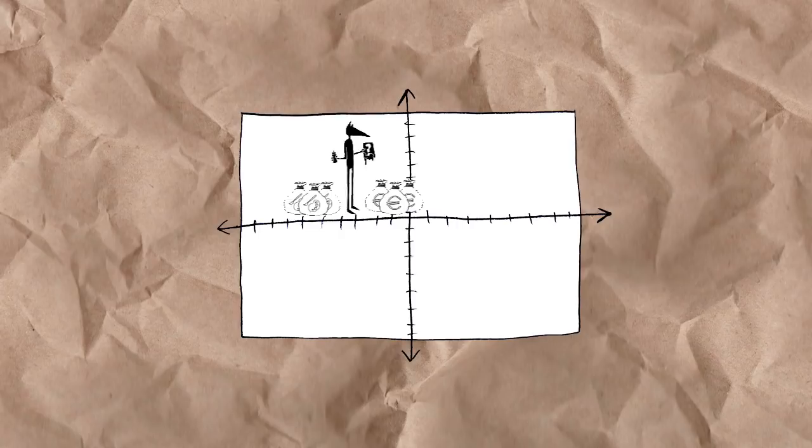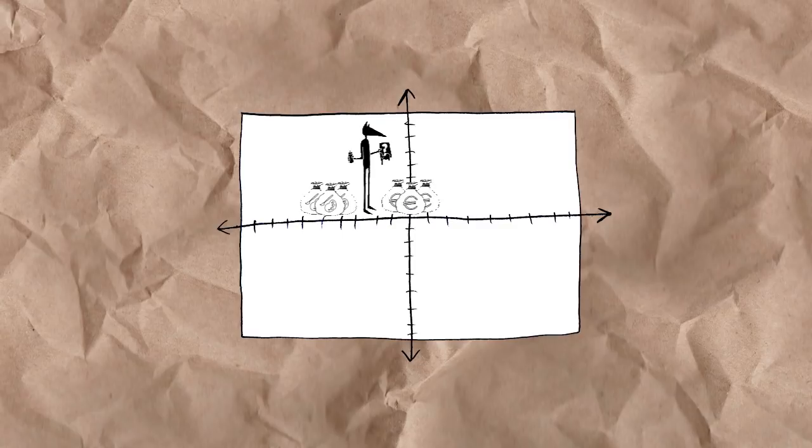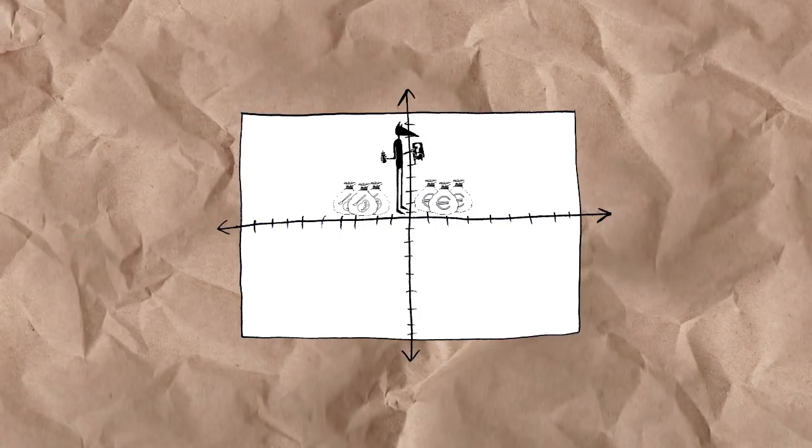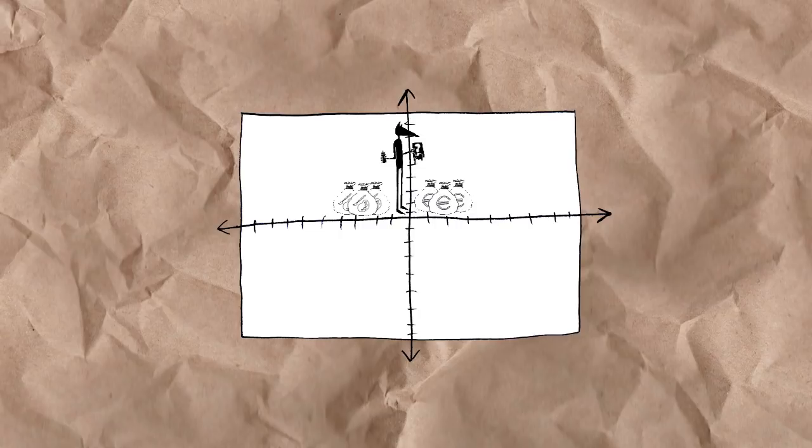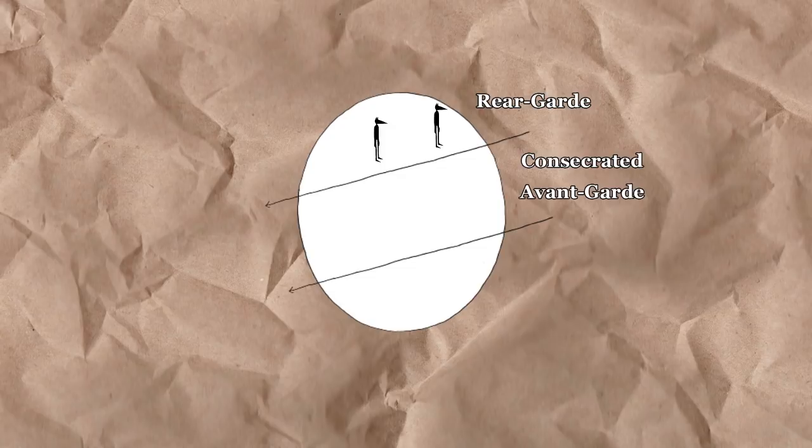Within fields, the consecrated avant-garde functions to legitimate the status quo and thereby ensure its reproduction. However, it is important not to reduce the motivations of the consecrated avant-garde to an interest in popularity and economic capital, as these are in many cases by-products and not motivations. The rear-guard is composed of artists from former generations of the consecrated avant-garde who have been canonised within art history and whose symbolic capital is therefore beyond question. As such, the prices their works fetch in the art market are very stable. In the field of art, artists such as Rembrandt are members of the rear-guard. I would like to conclude by pointing out that these explanations are simplified and partial and are only intended as an introduction to the main concepts used in field theory. Here are some useful references for those interested in learning more.